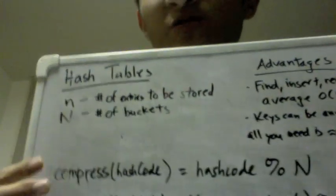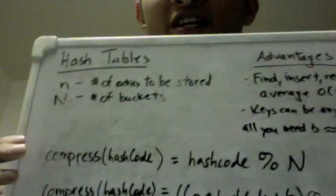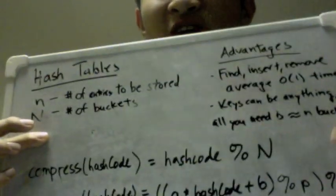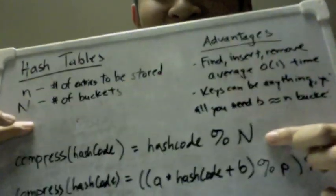So the obvious choice is to use hash code mod n, where hash code is a random address that Java assigns to each object, and n, a prime number of buckets. This will create a nice random spread of 0 to n-1.